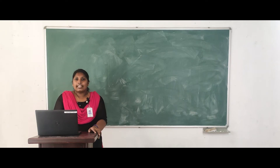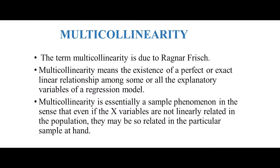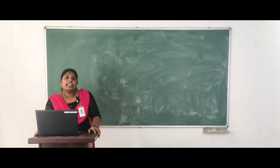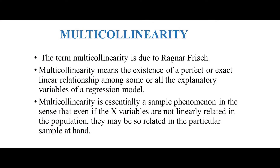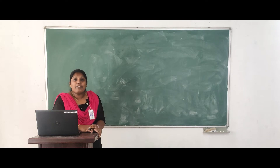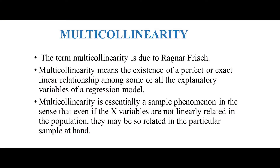First, we look at what is multicollinearity and what are its causes. The term multicollinearity is due to Ragnar Frisch, who was a Norwegian economist. He also coined the terms microeconomics and macroeconomics in 1933. Multicollinearity means the existence of a perfect or exact linear relationship among some or all the explanatory variables of a regression model. One of the important assumptions of the classical linear regression model is that the independent variables are not correlated with each other. The violation of this assumption is known as the problem of multicollinearity.